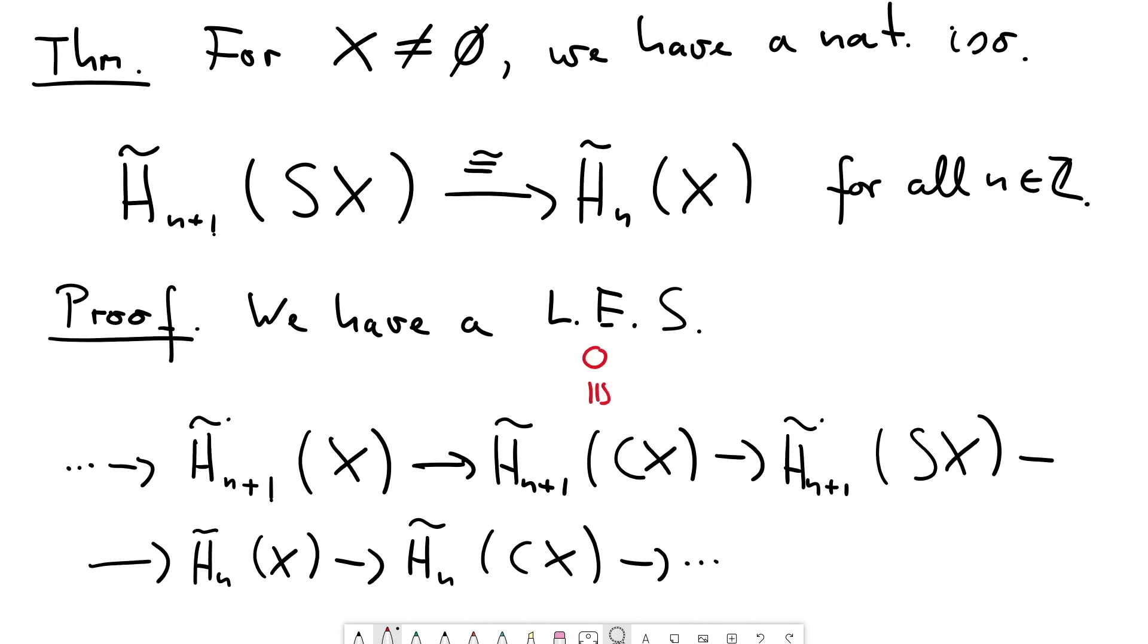Reduced homology of the point is zero in all degrees. So this is just zero. And this is also just zero. And therefore this morphism is zero. Therefore this morphism is zero. And therefore the boundary homomorphism here is an isomorphism. And this is precisely the suspension isomorphism.